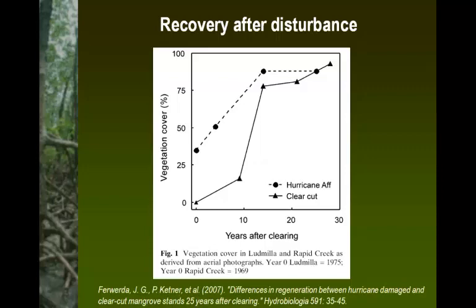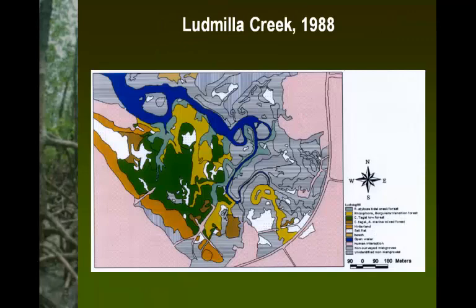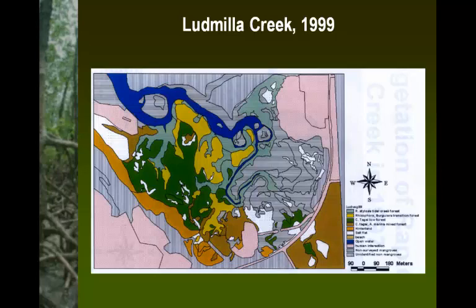This shows Ludmilla Creek in 1988 and then about 10 years later. Watch the areas that are white with blue dots — towards the top left you'll see they shrink. Those gaps were canopy gaps left by Cyclone Tracy. Between 1975 and 1988 a lot filled in, and over the remaining time more of those canopy gaps have been filled in.